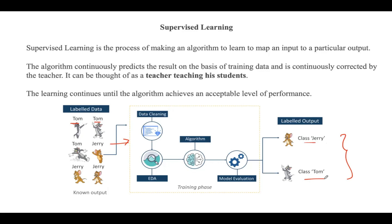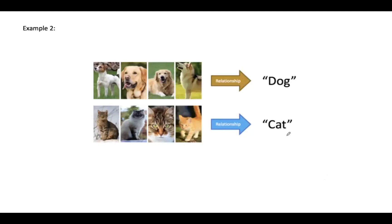As a second example, suppose you have a niece who has just turned two years old and is learning to speak. She knows the words papa and mama as her parents have taught her. Now you want to teach her what a dog and a cat are. You either show her videos of dogs and cats or bring a real dog and cat so she can understand how they are different.